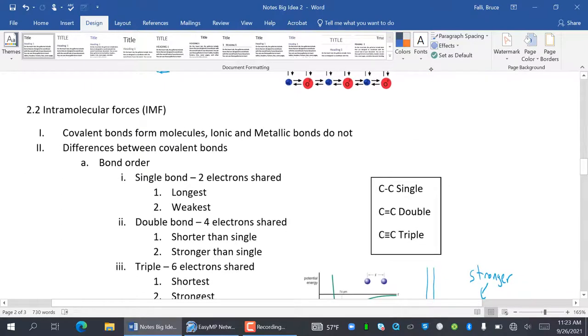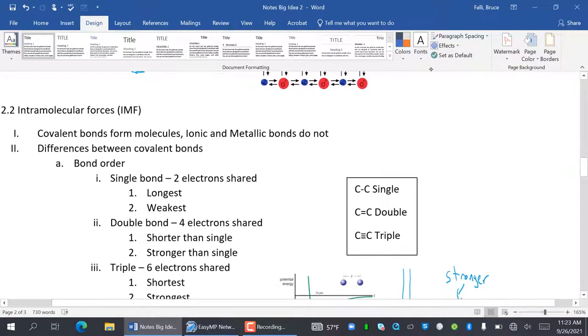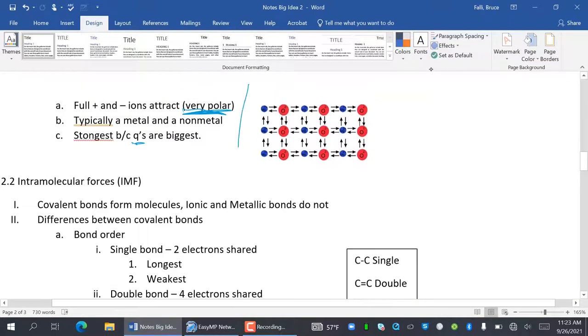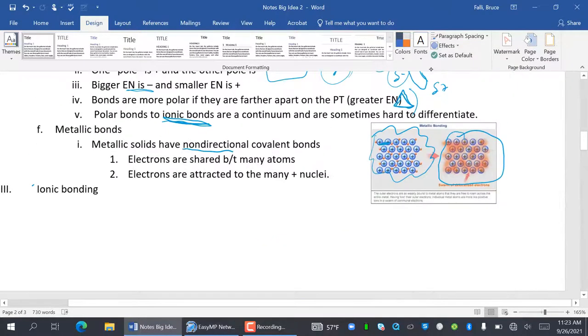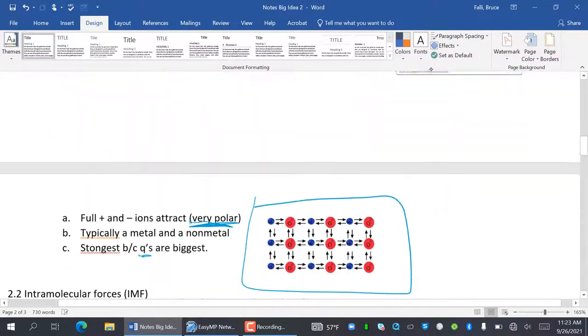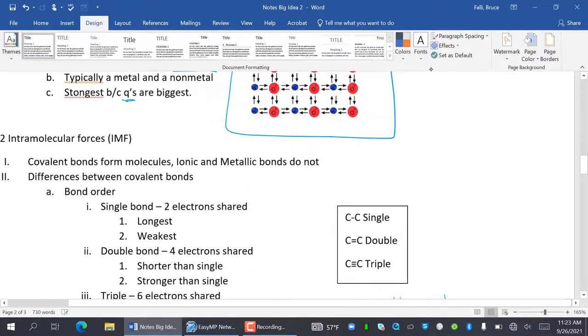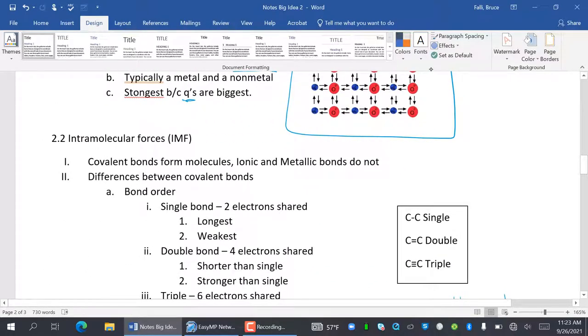2.2 is intermolecular forces, although we don't really get into intermolecular forces here. It's weird that it says that. Covalent bonds form molecules. Ionic and metallic bonds do not. So see how this is not a molecule that doesn't have a distinct beginning or an end? This is not a molecule. It doesn't have a distinct beginning or an end. They form molecules. Water is a molecule because it's a distinct beginning and end.